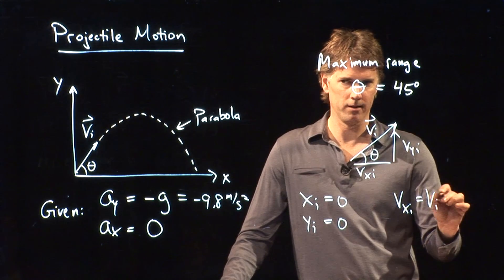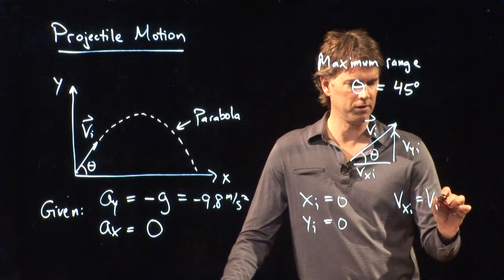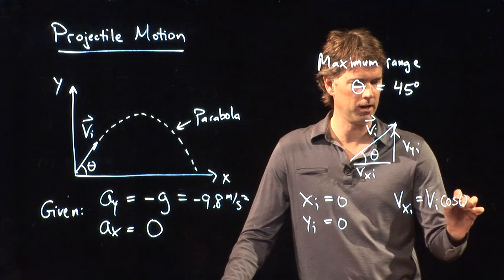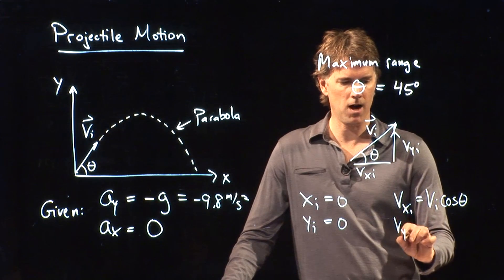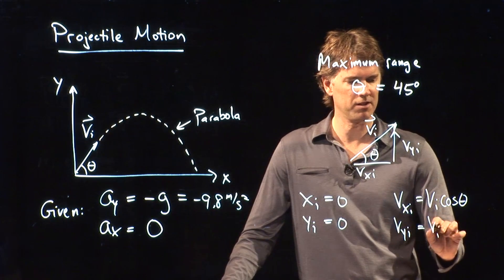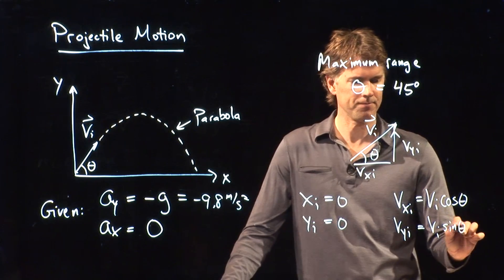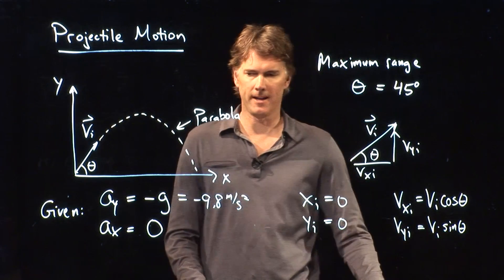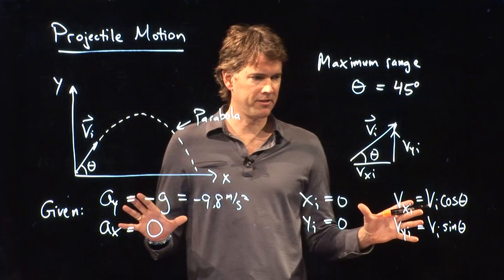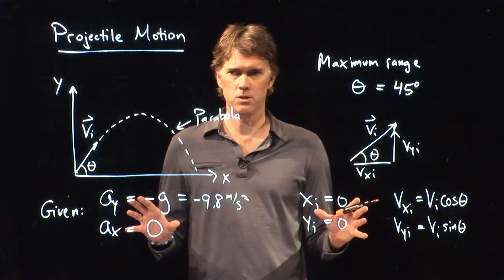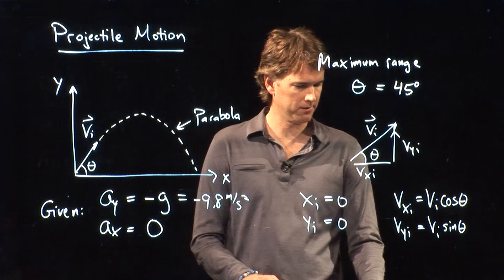Vi, what do I want to write? Cosine, right? Cosine of theta. Vyi is therefore sine of theta. We can put all this stuff together now into the kinematic equations. And let's do that next.